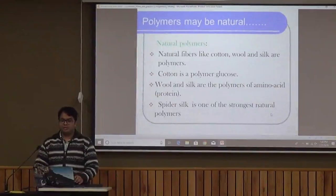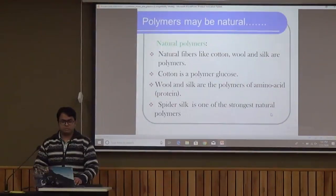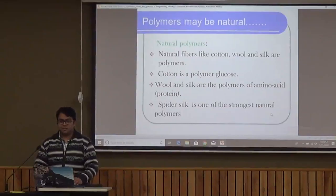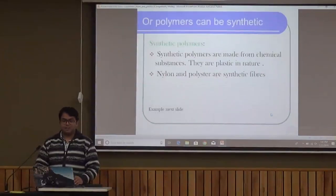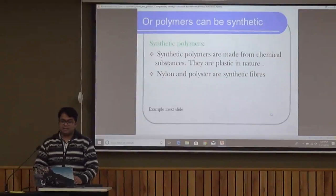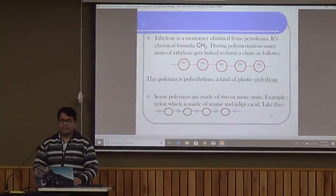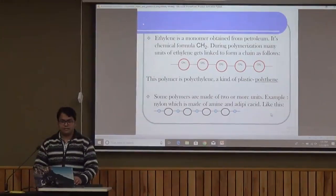Polymers may be natural, like cotton, wool, and silk, which are natural fibers. Cotton is made up of glucose, which is the monomer. Wool and silk are made up of proteins. Synthetic polymers are made from chemicals; they are basically plastic in nature with properties like nylon and polyester. Ethylene is a very common substance used to make polythene. The CH₂ units are arranged in a long array to form polythene or polyethylene.